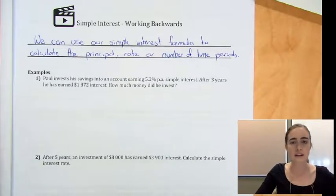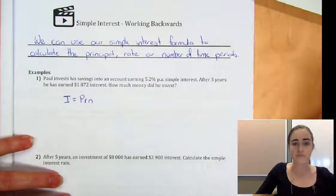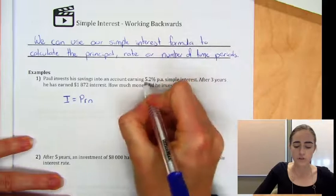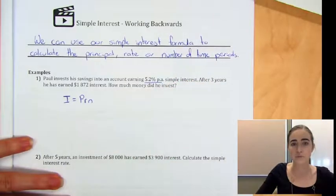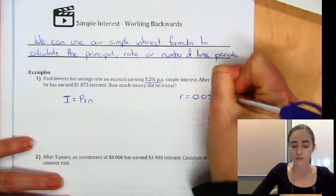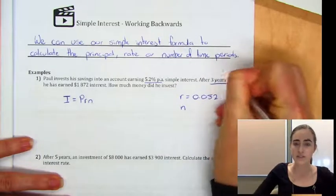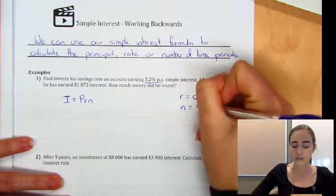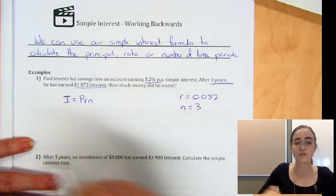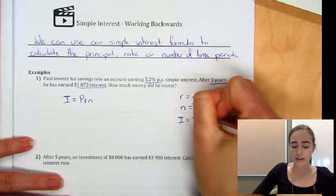So we're still going to write down our formula. We've still got I equals PRN. But now we want to figure out what we know. We've got 5.2% per annum simple interest rate, so our R is going to be, as a decimal, 0.052. Our number of time periods is three years, so N equals three. And the last thing it tells us is that he's earned $1,872 interest. So that's our I, 1872.